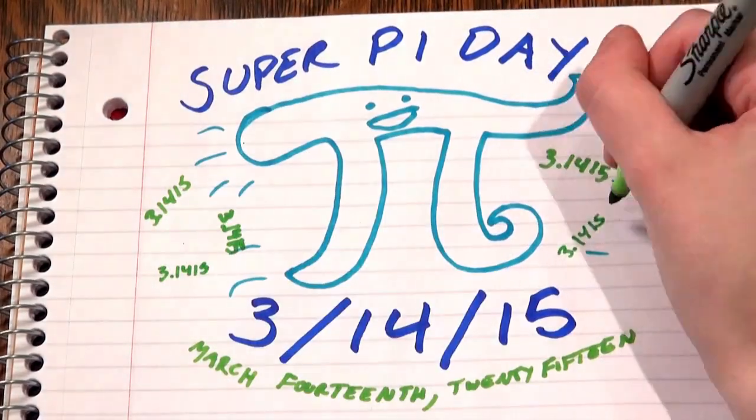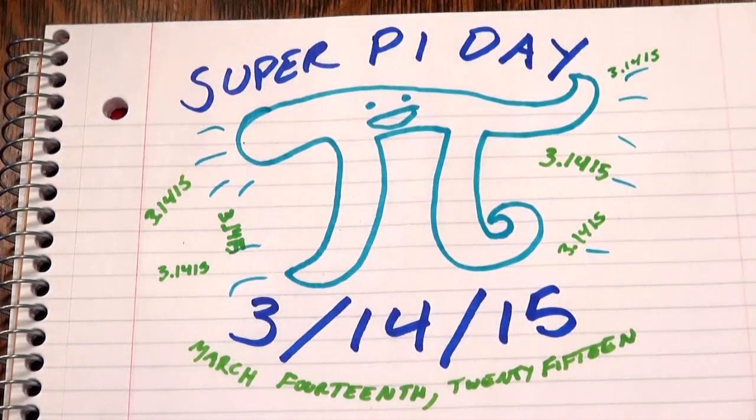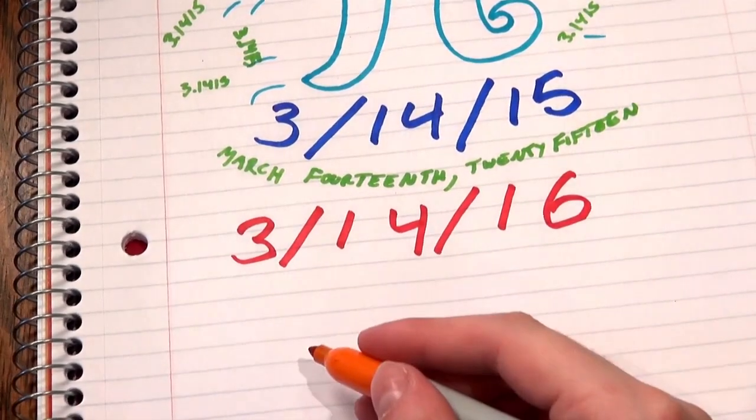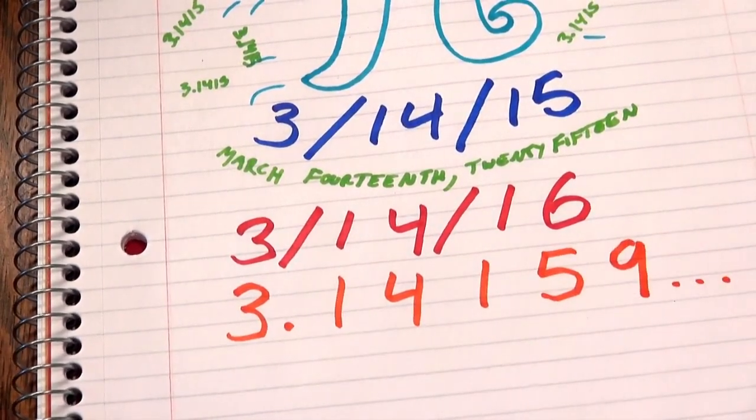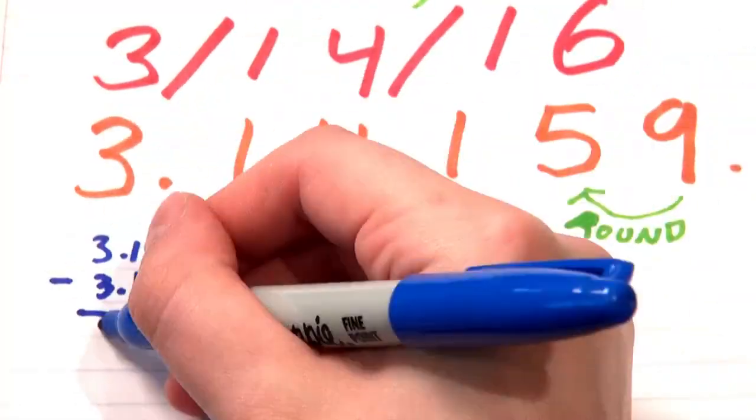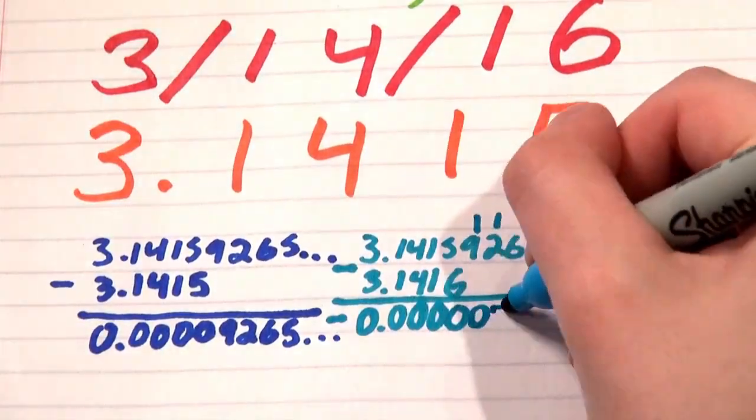But what upsets me is that there is no such excitement for this year's Pi Day. Even though 31416 is actually much closer to Pi, and I mean much closer, the next digit is a 9, which is a pretty significant difference.